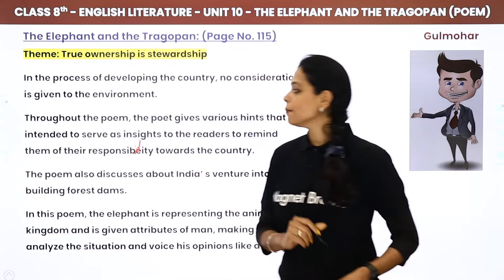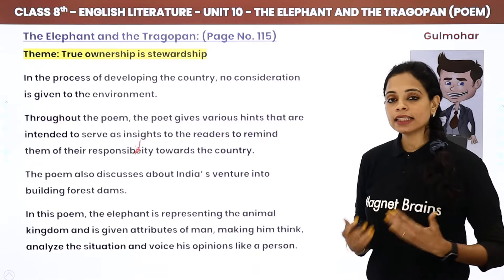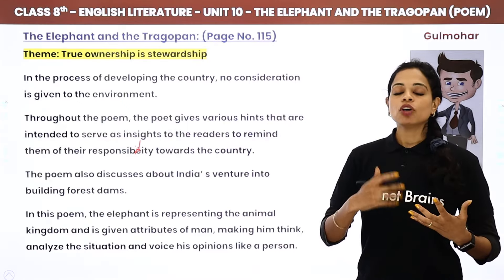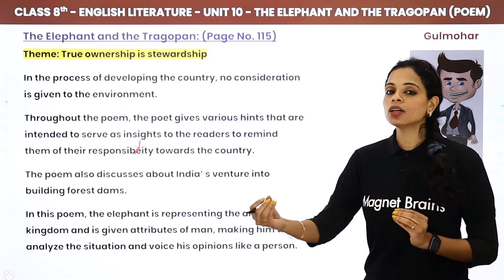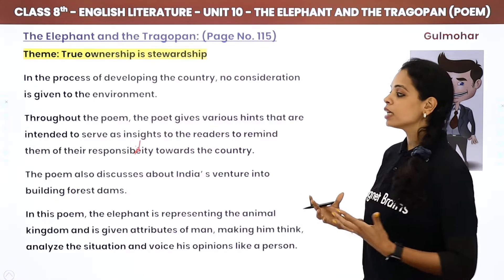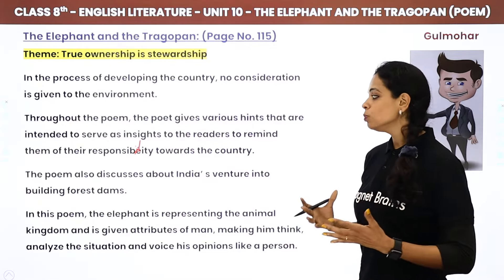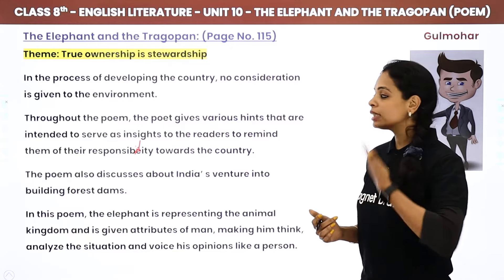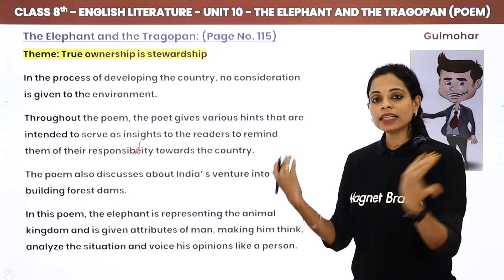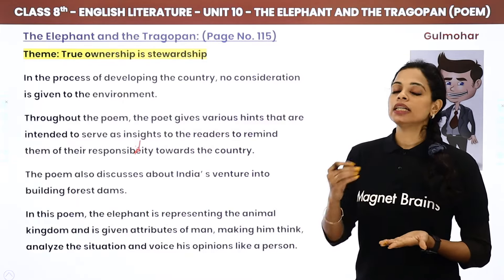Responsibility. So, in the whole poem the poet has many hints given. When the elephant is narrated, he is talking about humans' mistakes and hints. The poet gives insights so we get information and knowledge about our responsibility towards our country, our nature, and our planet — and how we are treating it.